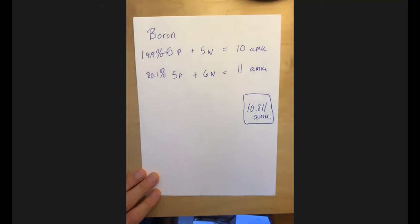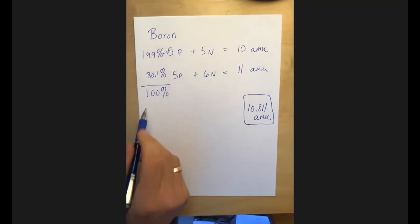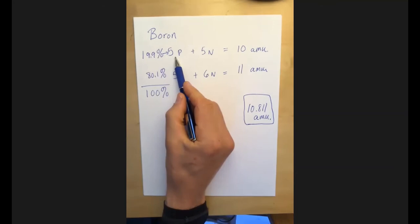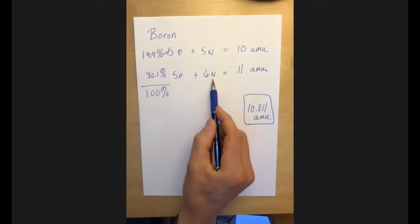And the boron that's 11 is 80.1%. You add those two numbers together and you get 100%. So one of the things that we know or that we've discovered is that in nature, boron has two isotopes. One of them with five protons and five neutrons, one of them with five protons and six neutrons. And together, they make up all of the boron that we find in nature.